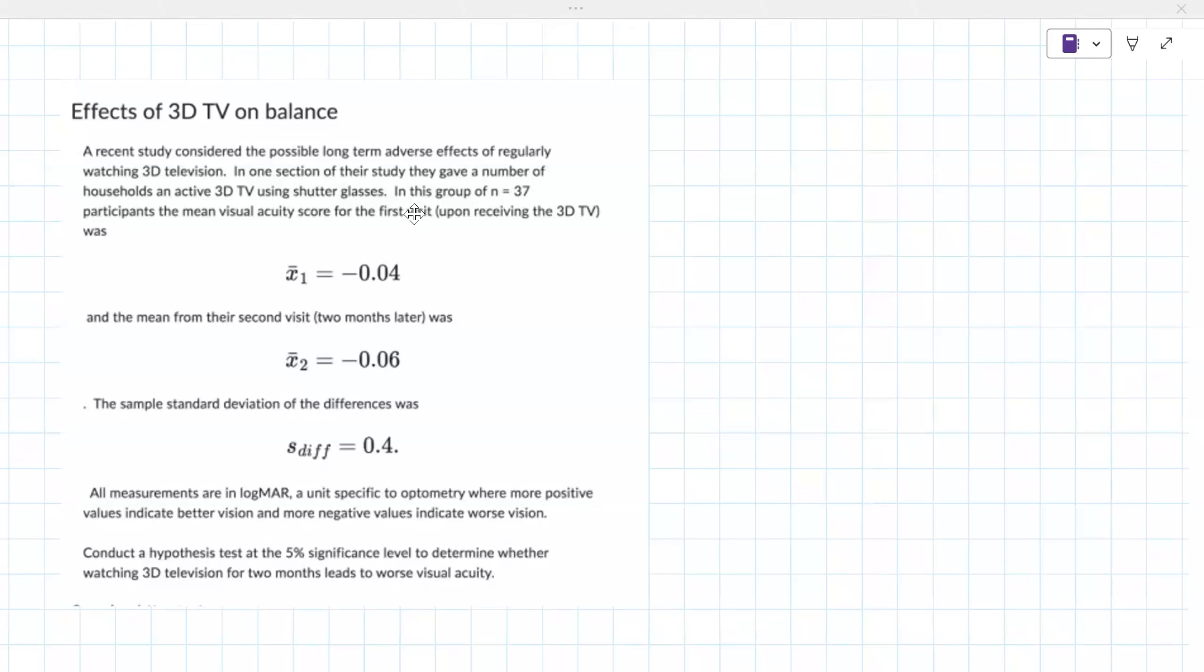They're giving you the mean of a first group. They tell you there's also a second group, but they're what are called paired. Paired is like when it's the same group kind of before and after. In this case it was like a first visit and a second visit to a store. They calculate the standard deviation of the differences is 0.4. So you're supposed to know that this is a paired t-test from that information - the difference is the big one there.